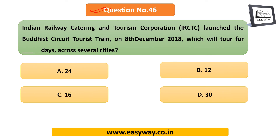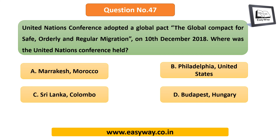Question 46: Indian Railway Catering and Tourism Corporation launched the Buddhist Circuit Tourism Train, which will tour for how many days across several cities? The answer is 16 days. Question 47: The United Nations Conference adopted the Global Pact for Safe, Orderly and Regular Migration on 10th of December 2018. Where was this conference held? The answer is Marrakesh, Morocco.